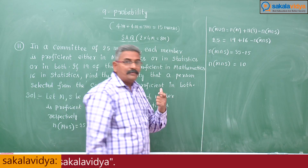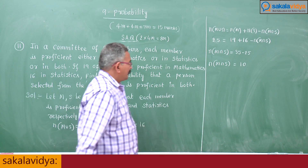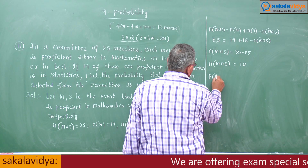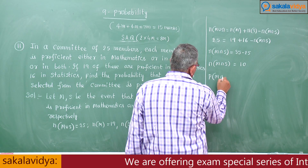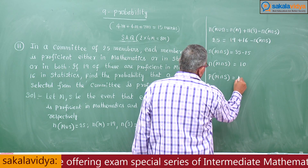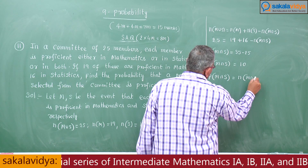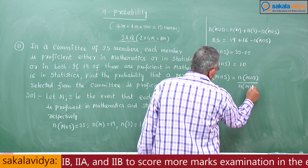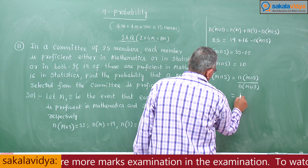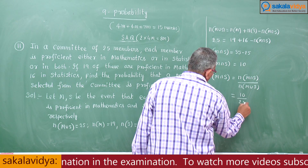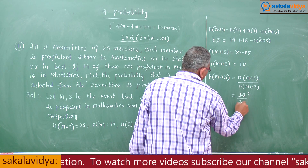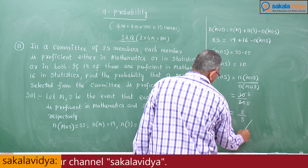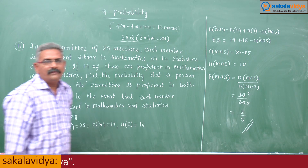Now we have to find the probability. P(M ∩ S) = n(M ∩ S) / n(M ∪ S) = 10/25 = 2/5. Therefore, the required probability is 2/5.